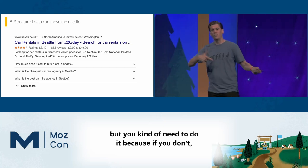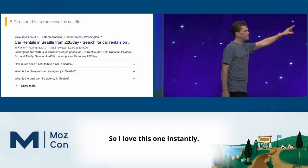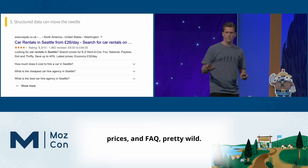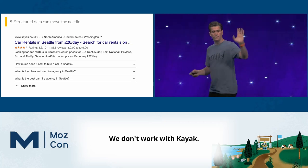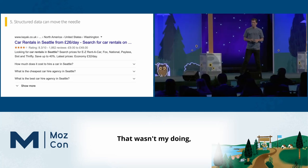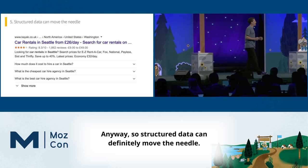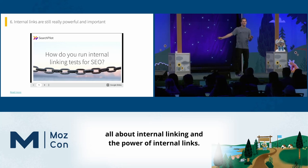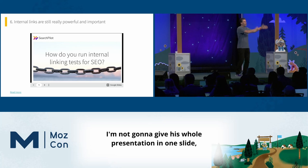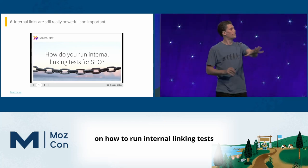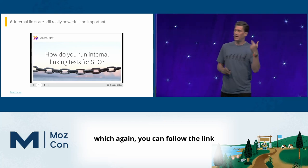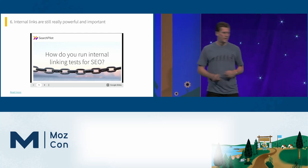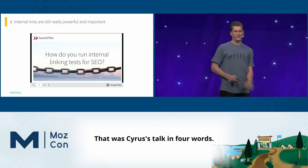I love this one — this structured data has stars, ratings, reviews, prices, and FAQ. Pretty wild. We don't work with Kayak, but still pretty cool. Structured data can definitely move the needle. I was supposed to be following a talk from Cyrus all about internal linking. I'm not going to give his whole presentation in one slide, but I've given a presentation on how to run internal linking tests — punchline: internal links good. That was Cyrus's talk in four words. Sorry, Cyrus.